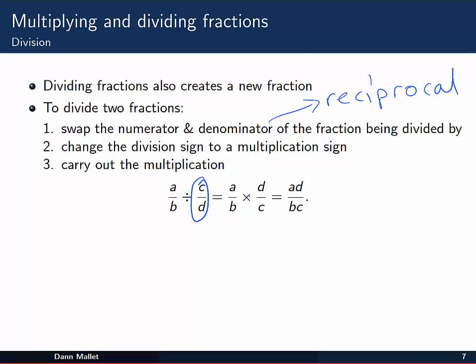We change the division sign then to a multiplication sign. And then we carry out the multiplication. So a/b divided by c/d becomes a/b times d/c. We can see the reciprocals there. Finally carrying out the multiplication across the top and across the bottom gives us ad/bc.